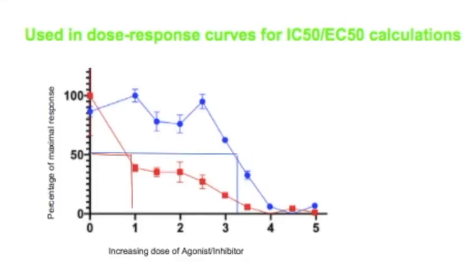Serial dilutions are also used when you need to determine the concentration of a compound or drug that is required to reduce a biological activity or interaction by 50%, what is referred to as inhibitory concentration 50 or IC50, through the creation of a dose response curve.